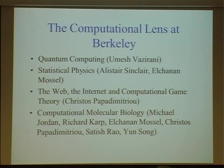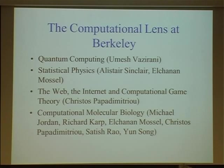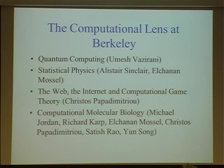Since I come from Berkeley, I'm influenced very much by what goes on there and what my colleagues do. In our theory of computation group, we work on classical things and new developments in complexity, cryptography, and logic. But we also look to the sciences for interesting new computational phenomena: quantum computing, statistical physics, the web, the internet, computational game theory, and computational molecular biology. I'll be giving examples from each of these areas.